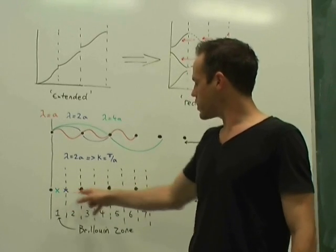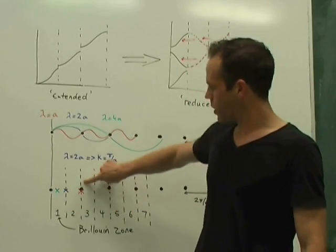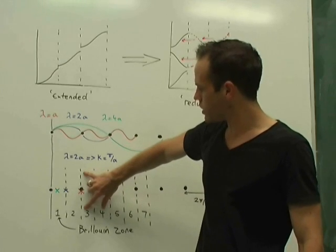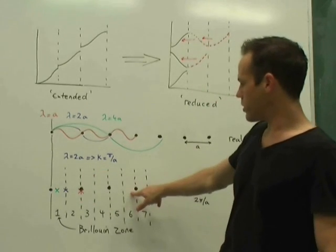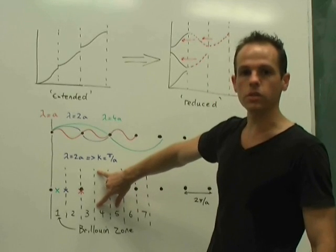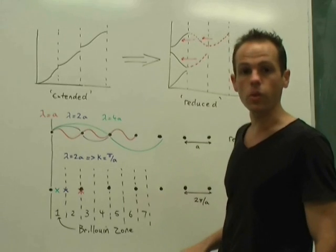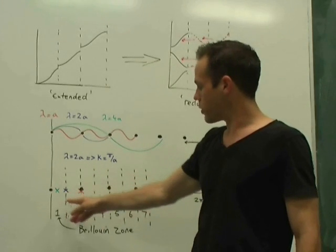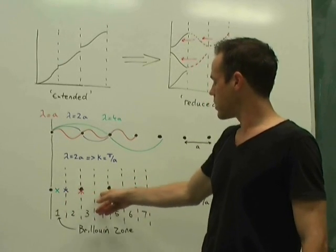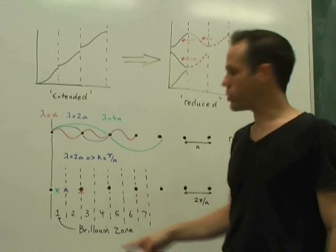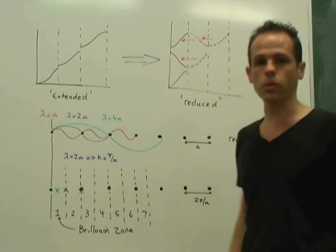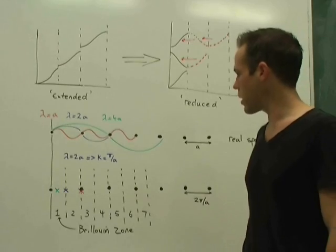And then you define your higher Brillouin zones as the perpendicular bisectors to the nearest neighbors. So the perpendicular bisector to the second nearest neighbor runs through here, and so this is the edge of my second Brillouin zone. The third nearest neighbor is this one here, and the perpendicular bisector of it is this one here, so that's the edge of my third Brillouin zone, and so forth. And so you'll notice here that the Brillouin zone edges just lie at half integer multiples of the reciprocal lattice point spacing.